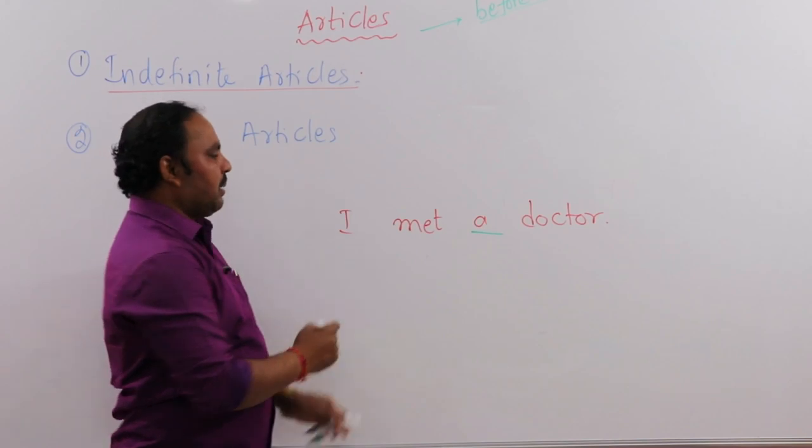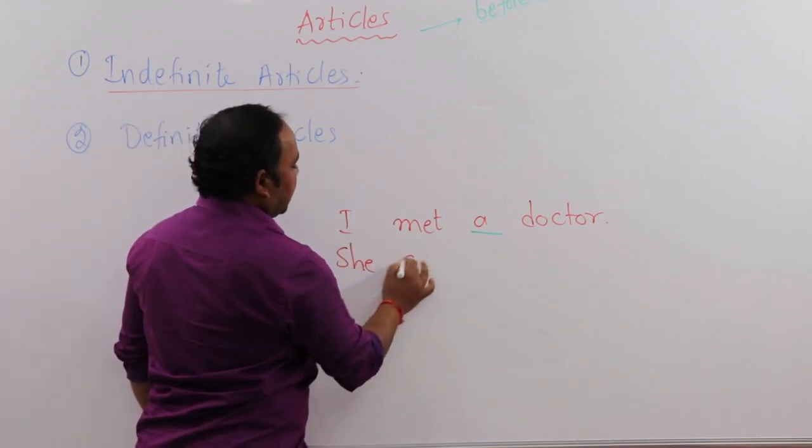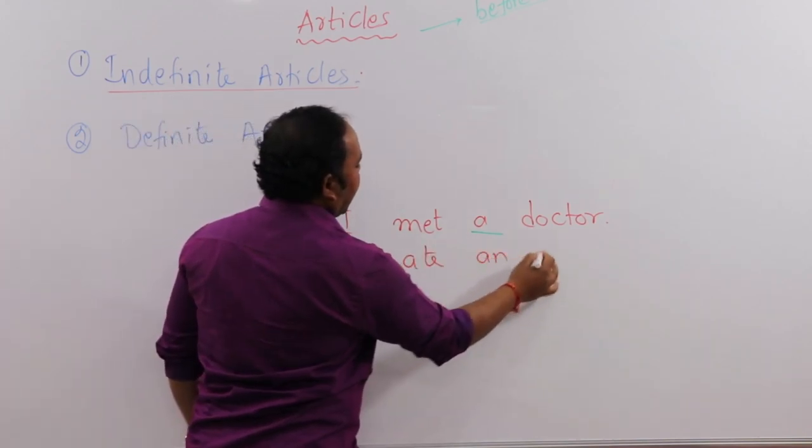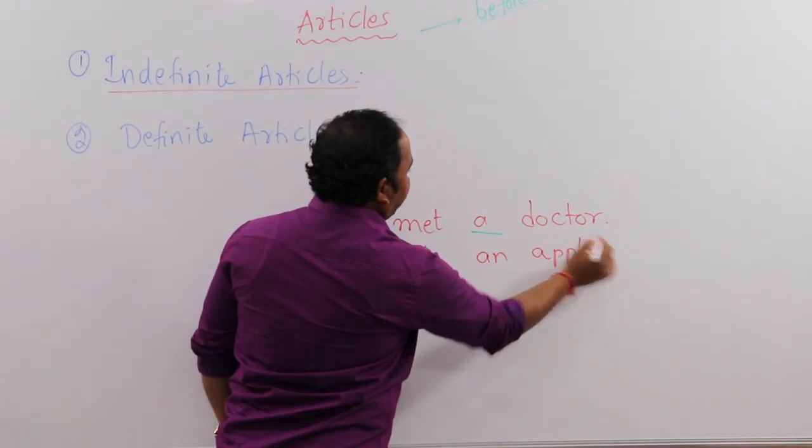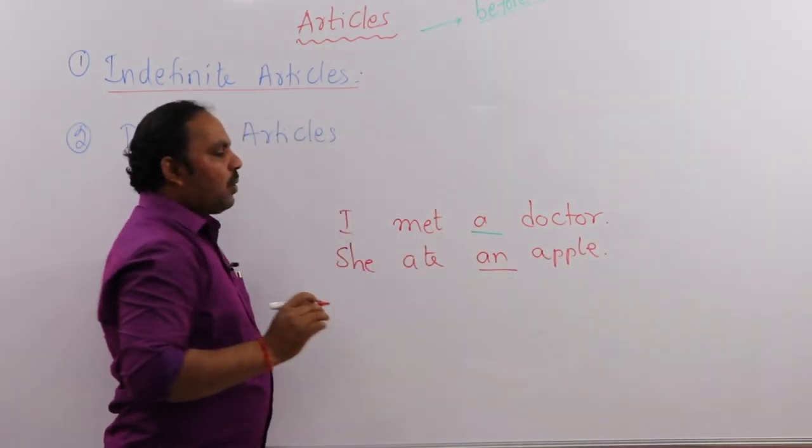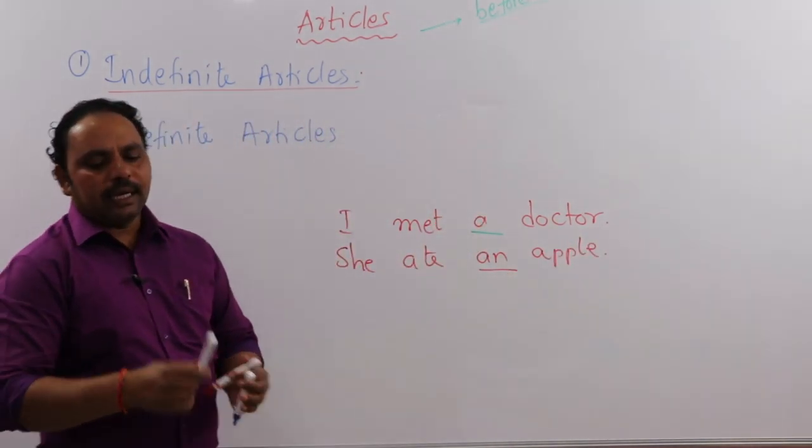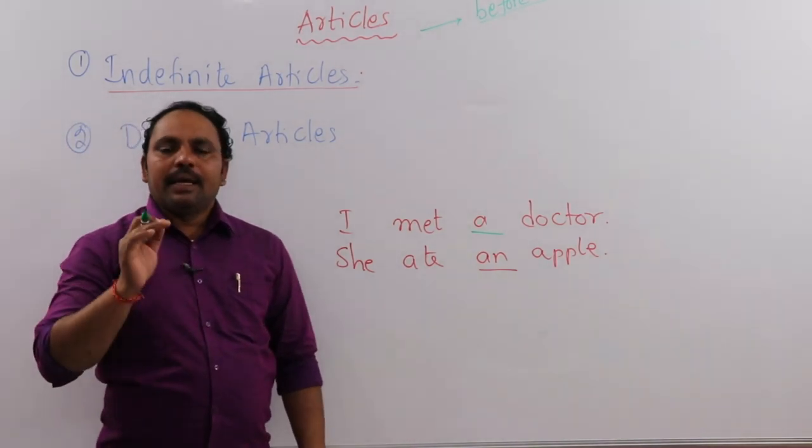One more example: She ate an apple. She ate an apple - meaning she ate some apple, but which specific apple is not clear.